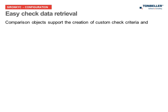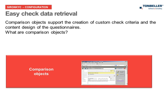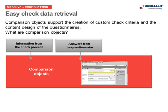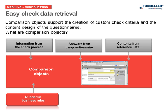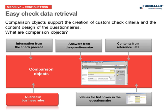Comparison objects support the creation of custom check criteria and the content design of questionnaires. Technically speaking, comparison objects are predefined data fields that store information from the check process, answers to questions in the questionnaire, or contents of custom references. On the one hand, comparison objects are used to define check rules in business rules — data stored in them can be used for existing as well as new customers. On the other hand, comparison objects provide static values for selection boxes in the questionnaire. All comparison objects have in common that their name can be specified in the user interface, which facilitates the definition of check rules and value lists.